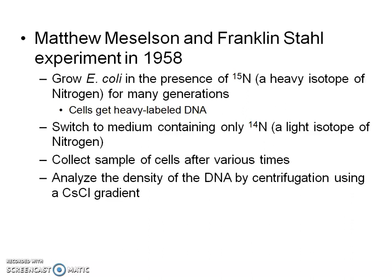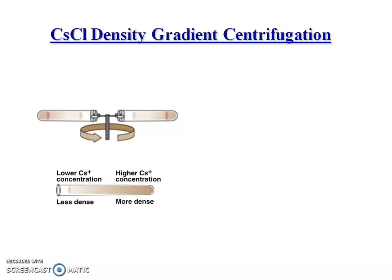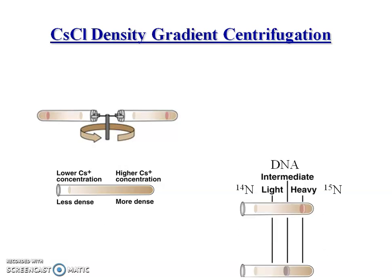They then switched the bacteria to a medium containing N-14, the normal nitrogen, and collected samples after various time intervals. They analyzed the samples using cesium chloride density gradient centrifugation. After centrifugation, cesium forms a gradient with low concentration in the upper part and high concentration in the lower part.